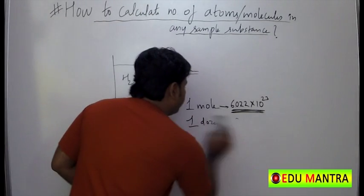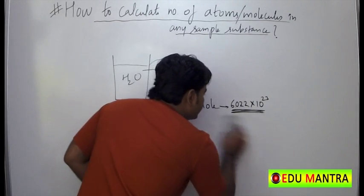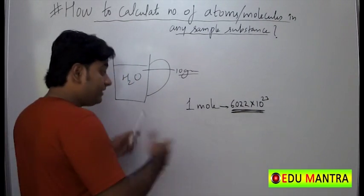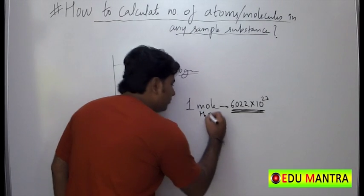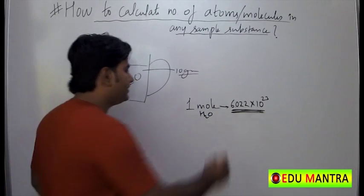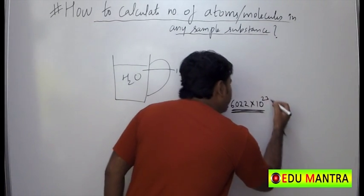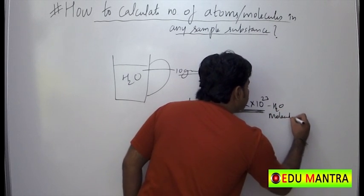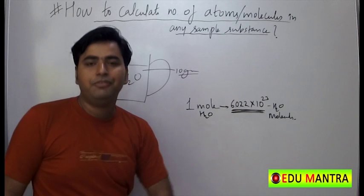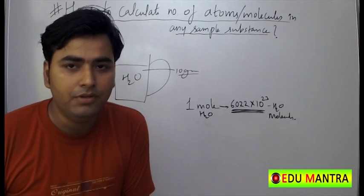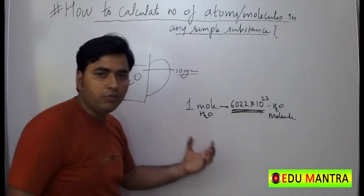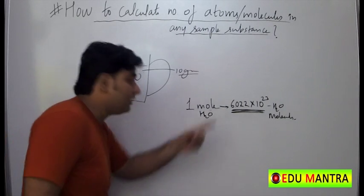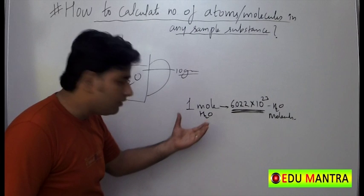So if it is one mole, it is 6.022 × 10²³. If I take one mole of water, it means 6.022 × 10²³ water molecules. One mole is also equal to the gram molecular mass of that substance.